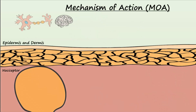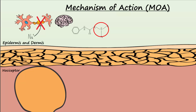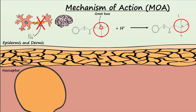Local anesthetics interfere with nerve impulses being sent to the brain by blocking sodium channels on nerve axons. In local anesthetic medications, amine groups have nitrogen bound to three things. An important feature is a lone pair of electrons associated with the nitrogen — lone pairs make great bases. The drug is mixed with an acidic solution before injecting so that the tertiary amine is protonated and becomes quaternary, making the compound ionic and suitable for injection.